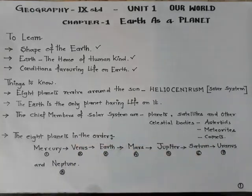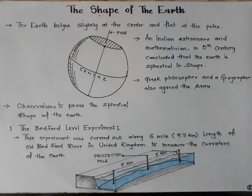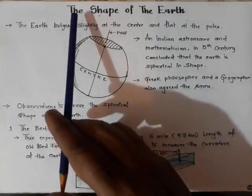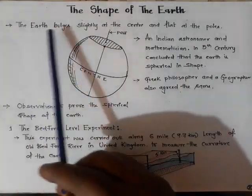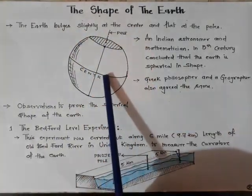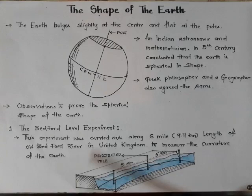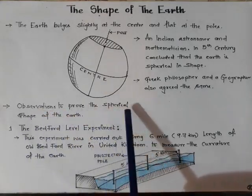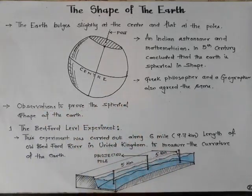Shape of the earth: The earth bulges slightly at the center and is flat at the poles. Hence, the earth is spherical in shape. To prove this, there are various observations and experiments being made.